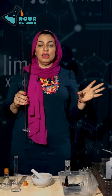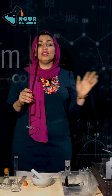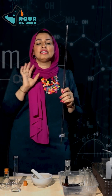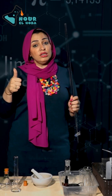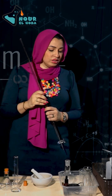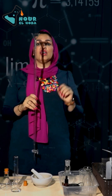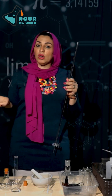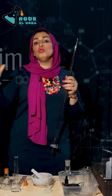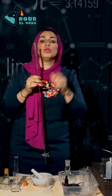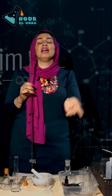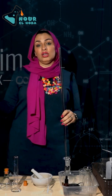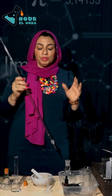When using the burette in titration, first rinse it with water to remove any impurities. Then rinse it with the substance you're going to fill it with — for example, sodium hydroxide. Use a filter funnel to fill it. If asked why you rinse with water: to clean it. If asked why you then rinse with sodium hydroxide: to remove any traces of water.